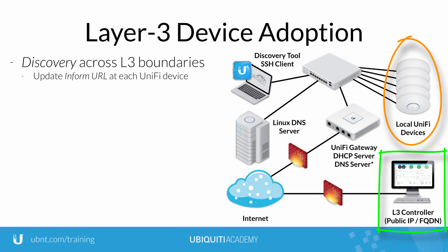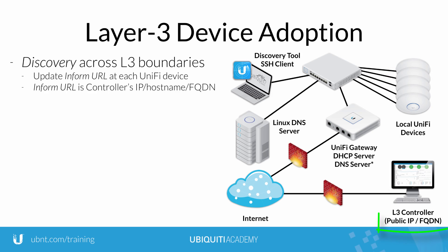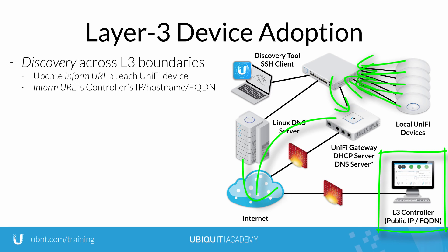To review, the Inform URL represents the network address of the Unify controller and can therefore point to any reachable network address belonging to the controller, including IP address, host name, or even a fully qualified domain name.